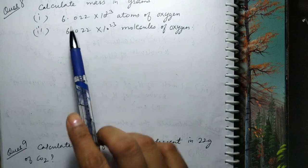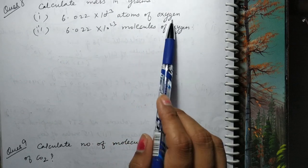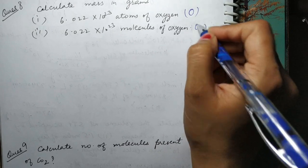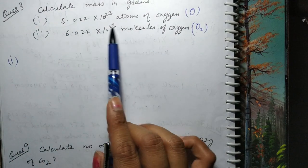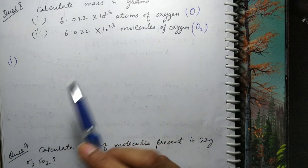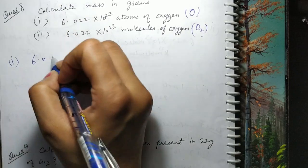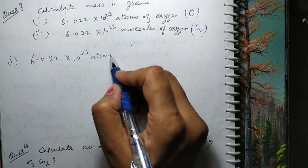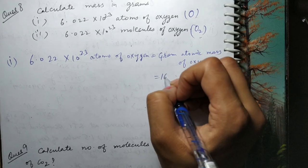Next question: calculate mass in grams of — (a) Avogadro's number of atoms of oxygen, and (b) Avogadro's number of molecules of oxygen. Yahan pe upar wale case mein O atom hai, neeche wale mein O₂. 1 mole = Avogadro's number of atoms in atomic state. So Avogadro's number of atoms of oxygen = gram atomic mass of oxygen = 16 gram.